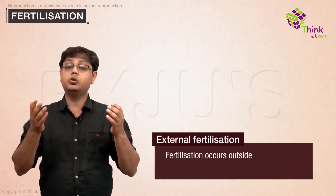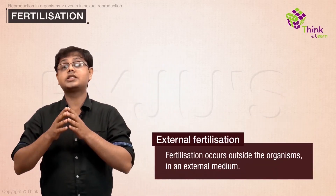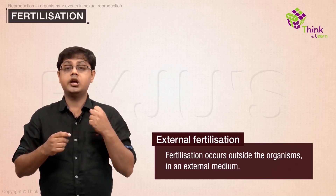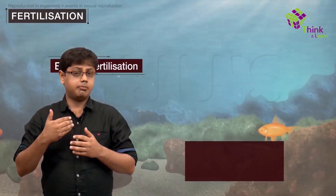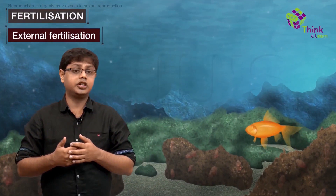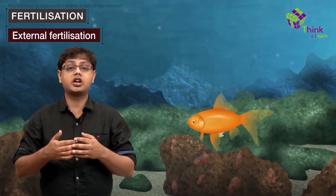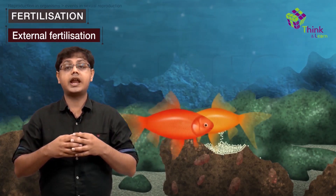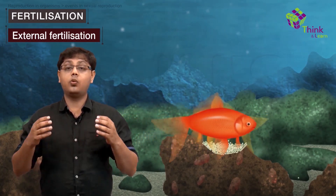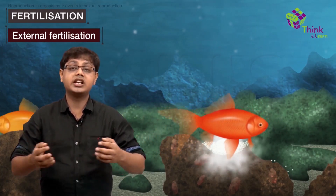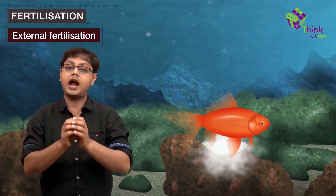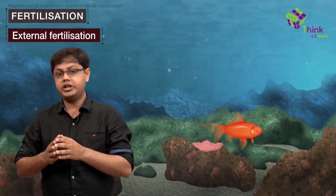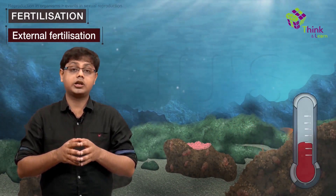If fertilization occurs outside the organism in an external medium, usually water, it is called external fertilization. Most external fertilization happens during the process of spawning, where one or several females release their eggs and one or several males release their sperm in the same area at the same time. The release of reproductive material may be triggered by water temperature or length of daylight.